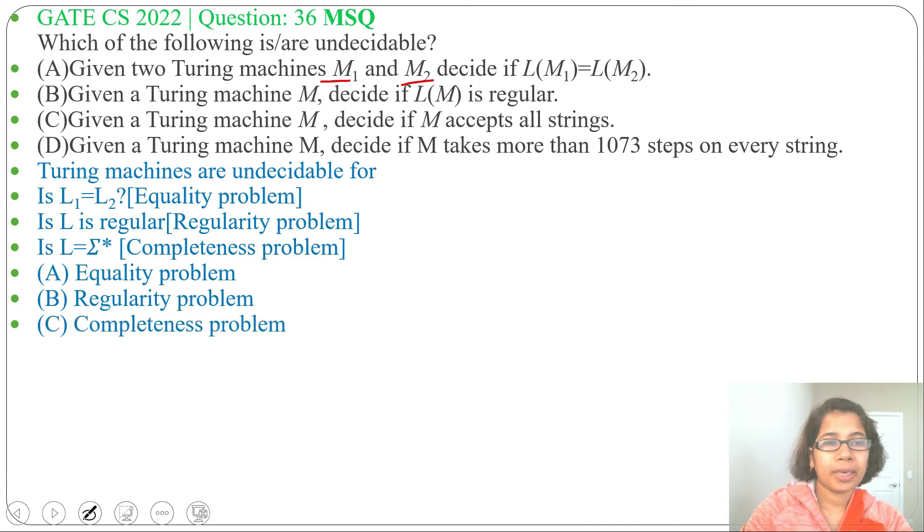So we found option A, option B, and option C are undecidable. Let's check option D: given a Turing machine M, decide if M takes more than 1073 steps on every string.